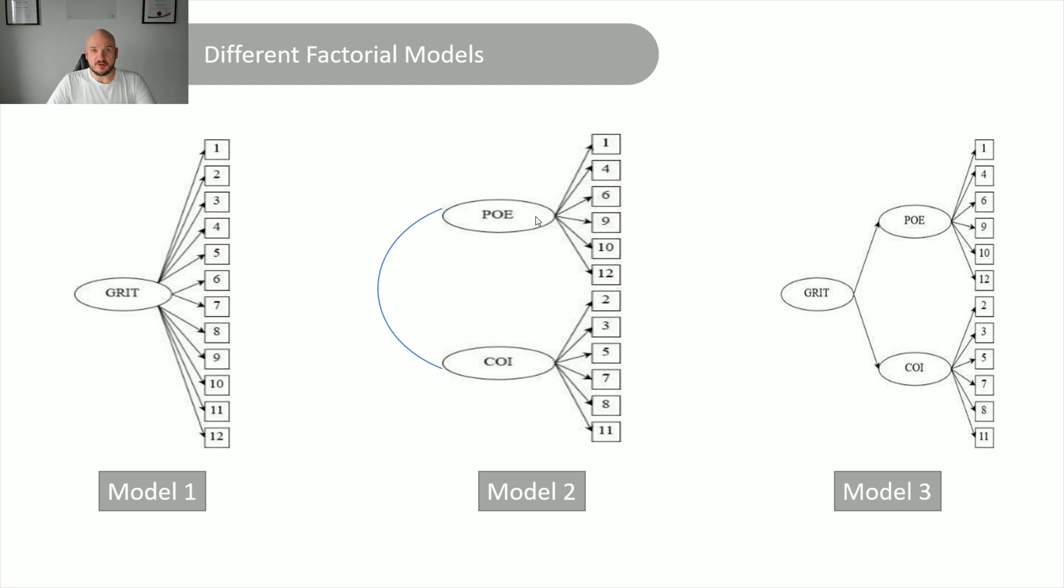But remember, in latent variable modeling, we are modeling things that aren't there. We're modeling things that are not observed. So in this case, for example, you can clearly see that grit is not there, right? But yet the instrument says that it measures grit.